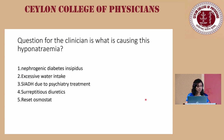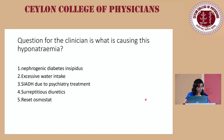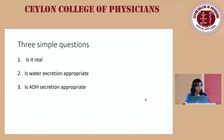The question for the clinician is: what is causing this hyponatremia? Is it nephrogenic, excessive water intake causing psychogenic polydipsia, SIADH from psychiatric treatment, surreptitious diuretic intake, or the state called reset osmostat? To answer this, you need to address three simple questions: Is it real hyponatremia? Is water handling appropriate in the body? Is ADH secretion appropriate?